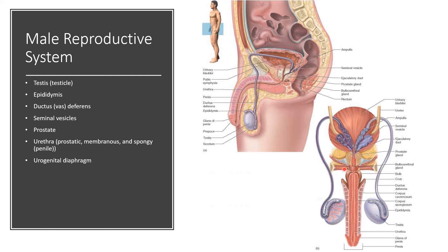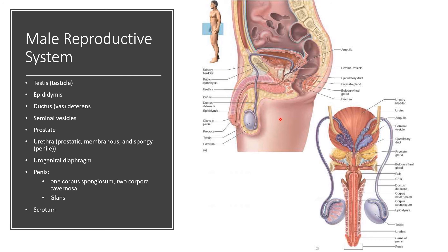The urogenital diaphragm is right here. And of course we have the penis, which consists of one corpus spongiosum and two paired corpora cavernosa — these are the erectile bodies of the penis. There's also the glans penis. Then there's the scrotum, in which the testicle and epididymis sit.